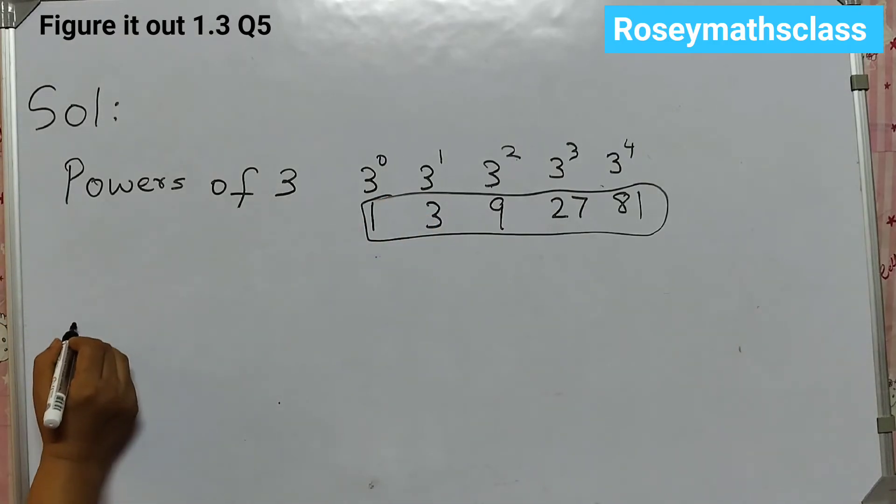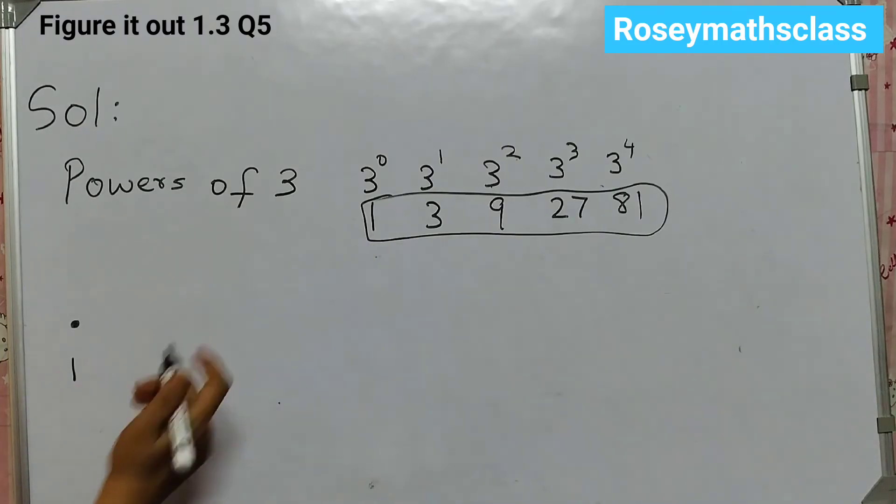And we need to show these numbers using dots. Okay. We will show this by dots. So first number is 1. Second number is 3. So 1, 2, 3. 3 dots.